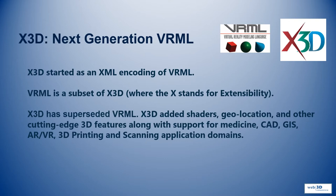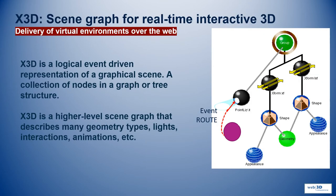X3D is a scene graph for real-time interactive 3D graphics. It's a higher-level scene graph that describes many types of geometries, lights, interaction, animation, and more. It's event-driven, as you can see in the diagram — a logical, event-driven representation of a graphical scene consisting of a collection of nodes in a graph or tree structure.